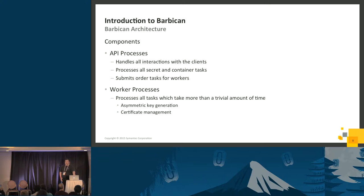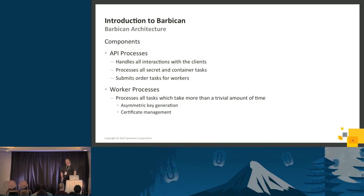There are two basic components to Barbican. There are API processes, which are the front door to the system — all client interaction occurs through them. These processes handle all requests for secrets and containers, whether you're storing or fetching. When you make requests for orders, the API processes take those requests, put them in the database, and send the request to an asynchronous worker for further processing.